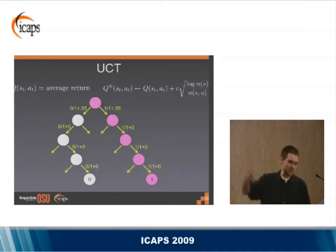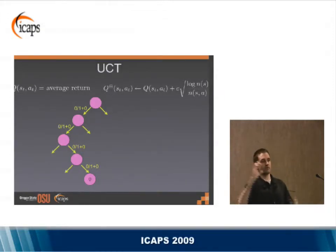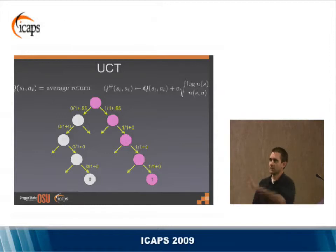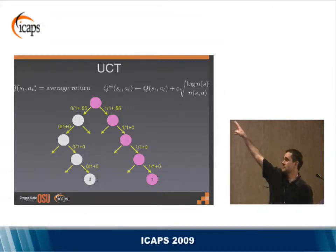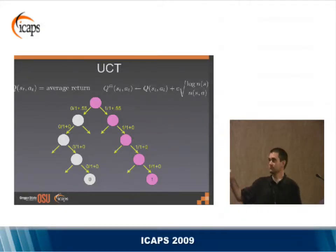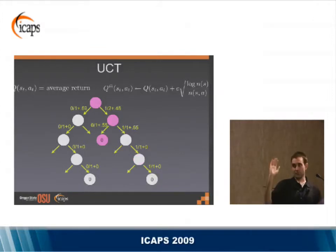As we take a trajectory from the root, we look at whether all actions have been taken from the current state. If not, we take an untried action, reach a new state, and act randomly from there. Once we run the trajectory, we update all values — including the exploration term log(N(s)), which is the number of times the parent state has been visited. This affects not only the actions taken but all children of visited nodes. Once all actions from a state have been taken, we combine exploitation and exploration values and follow them optimistically. That's UCT in a nutshell.